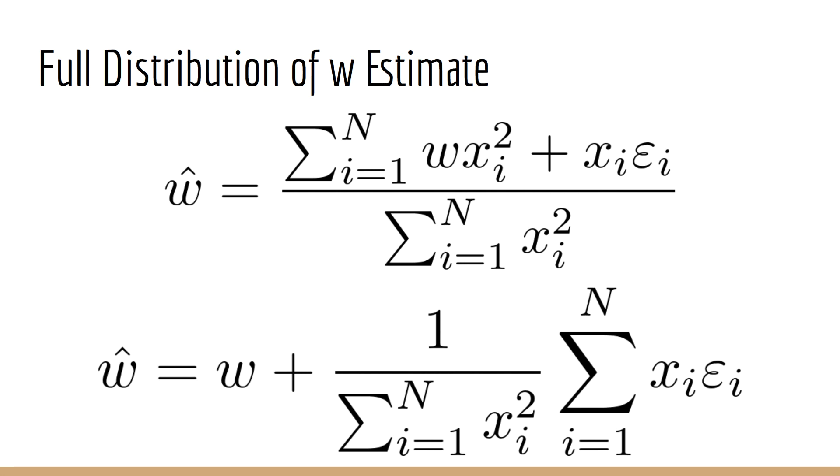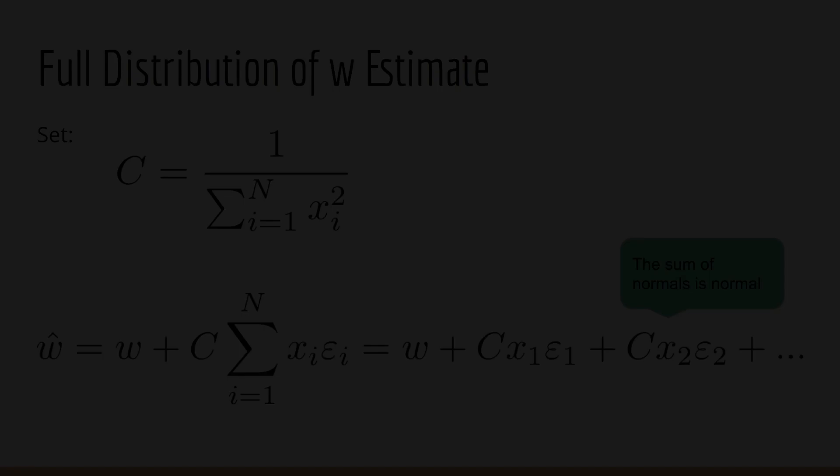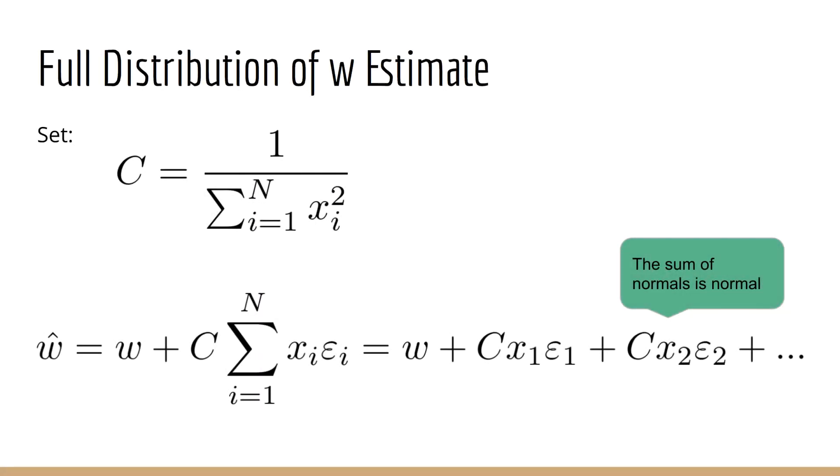The second term is a bit more complicated. Note that the bottom summation is completely separate from the top, so we can factor it out. To clean things up a bit, let's call this C. So big C is 1 over the sum of all the x sub i squared. Now what we have is basically a linear combination of epsilon sub i's. If we were to write this out in full, we'd have big C times x1 times epsilon 1 plus big C times x2 times epsilon 2 and so forth.